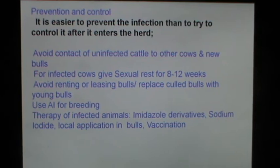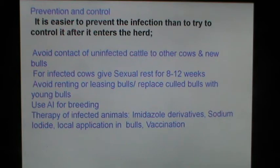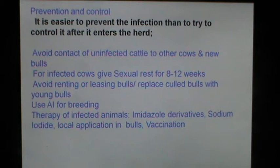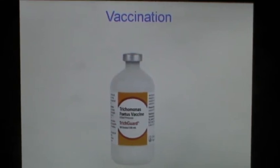Prevention and control: it is easier to prevent the infection than to control it after it enters the herd. Avoid contact of uninfected cattle with other cows and new bulls. For infected cows, a sexual rest of eight to twelve weeks would take care of the Trichomonas. Avoid renting or leasing bulls. Replace cow bulls with young bulls. It's advisable to use artificial insemination for breeding. Infected animals can be treated with imidazole derivatives, sodium iodide, and local application in the bulls. A Tritrichomonas fetus vaccine is available commercially and can be used before the breeding season.